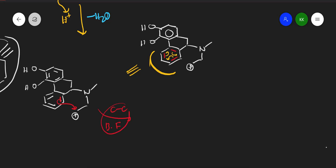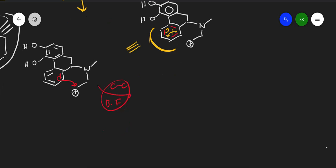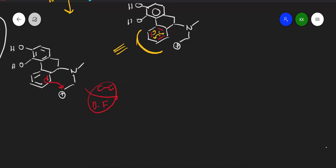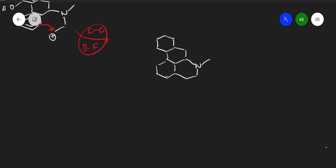This is analogous to Friedel-Crafts type electrophilic substitution reactions. A six-membered ring formation happens, and other groups remain as they are. After ring closure, with N-CH₃ and CH₂, the positive charge shifts to the ring carbon.